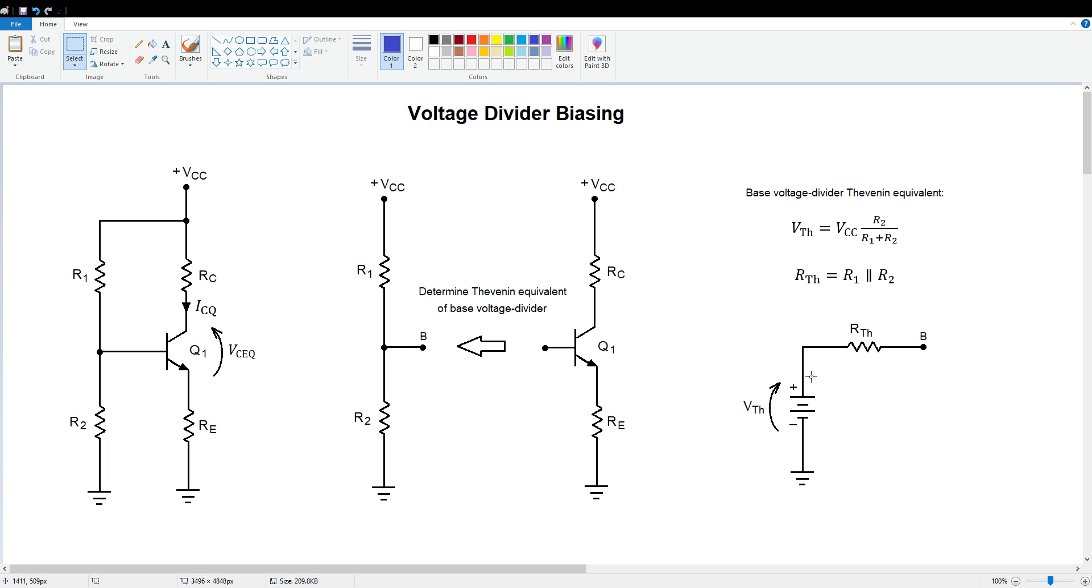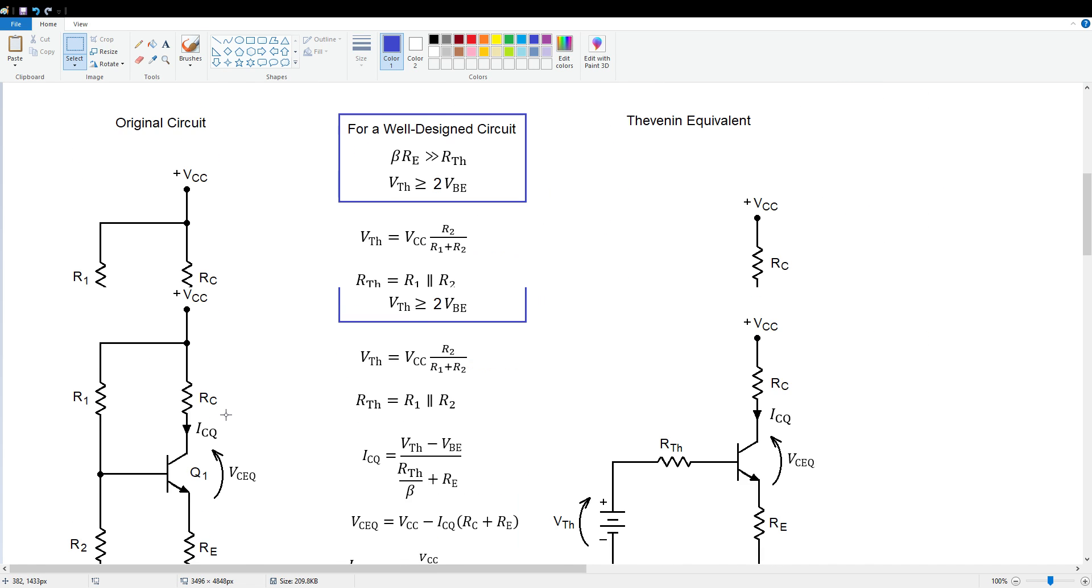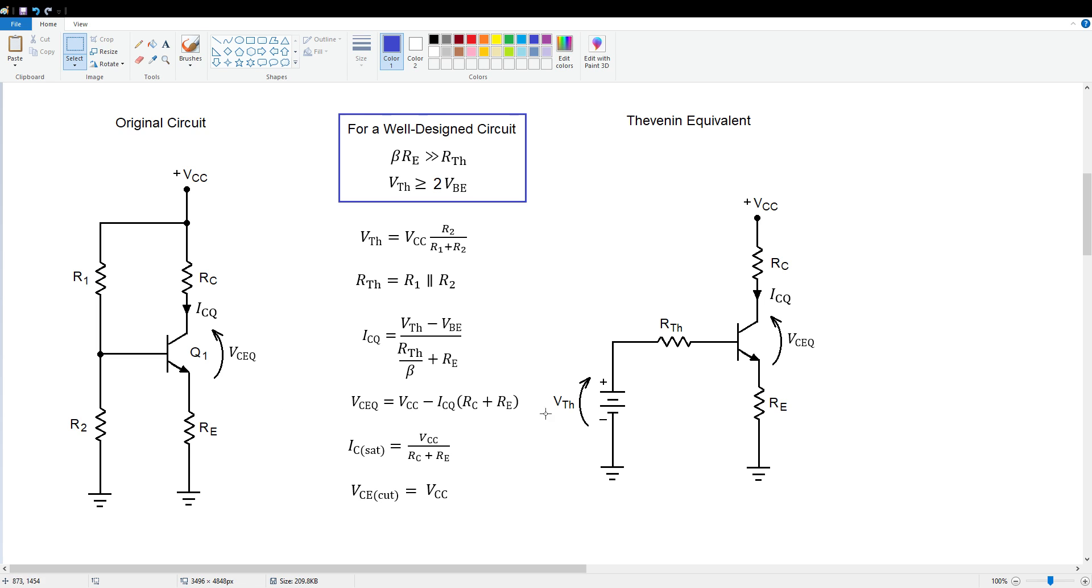Now substituting this Thevenin equivalent back into our original circuit, this is what we get. For reference purposes, I put the original circuit over here on the left. Now for a well-designed circuit, that is a circuit with a relatively stable Q point independent of beta, we require beta times RE to be much larger than RTH.